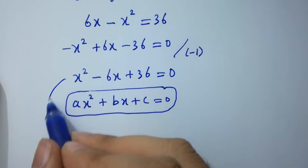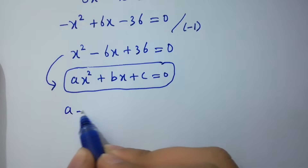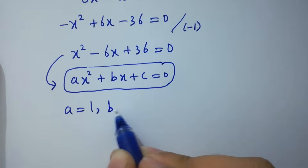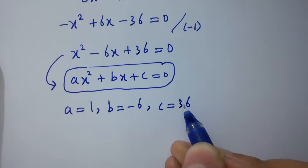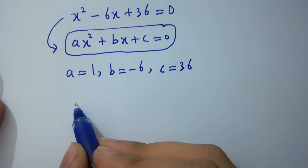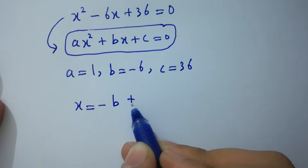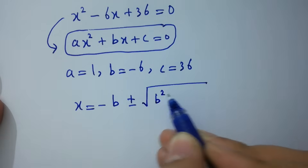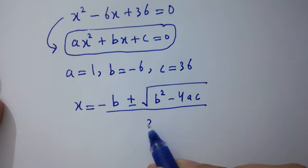By comparing, we have a equals 1, b equals negative 6, and c equals 36. Applying the quadratic formula: x equals negative b plus or minus the square root of b squared minus 4ac, all over 2a.